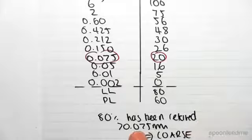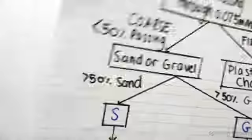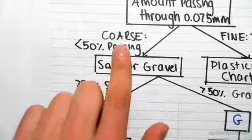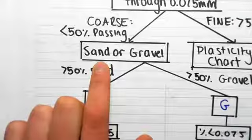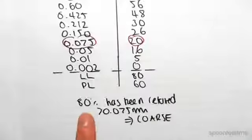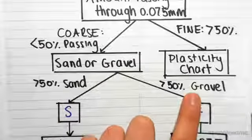Okay, so we know we can come down this branch because we're dealing with coarse material. We then need to work out whether the majority of what has been retained—the majority of that 80 percent—is sand or is gravel.